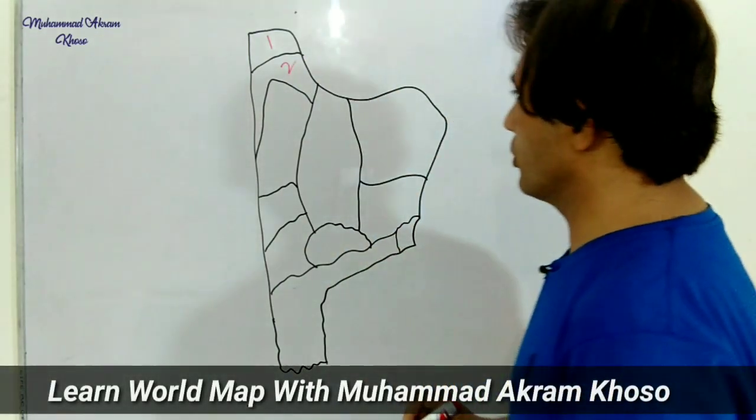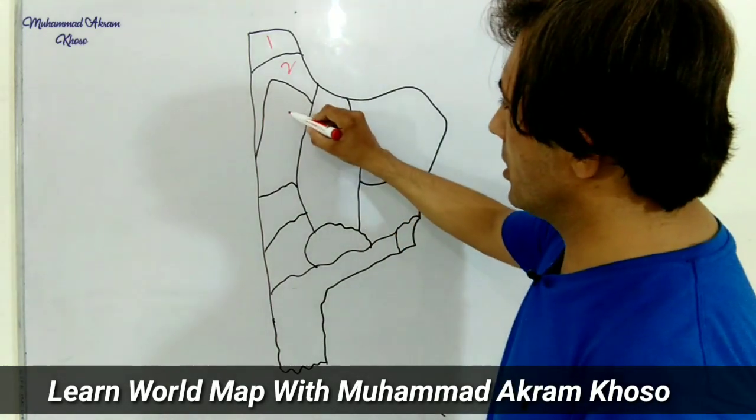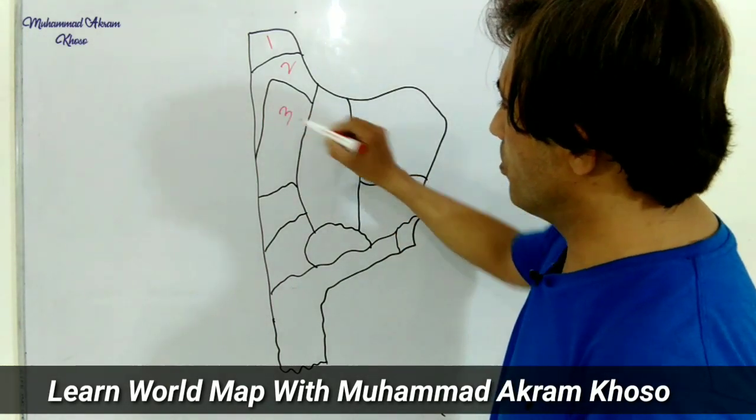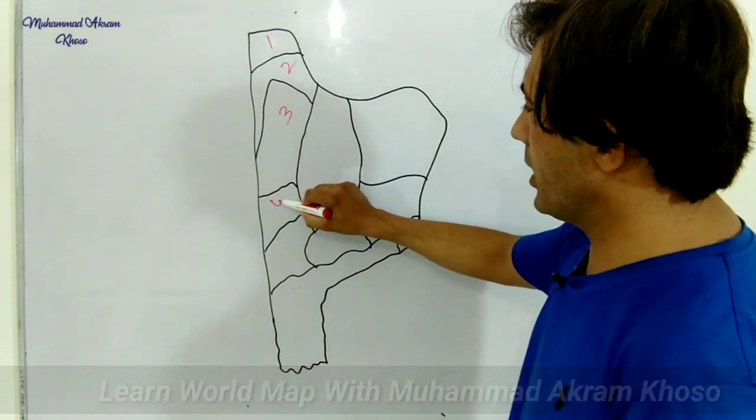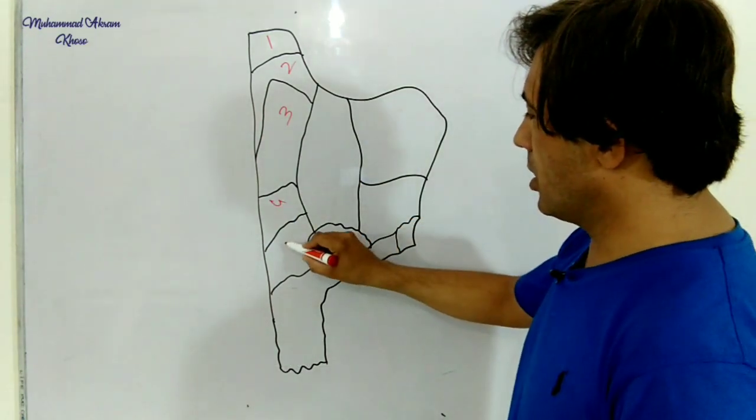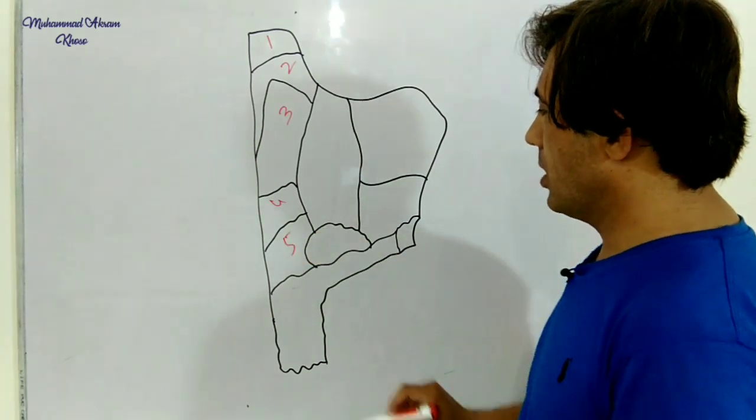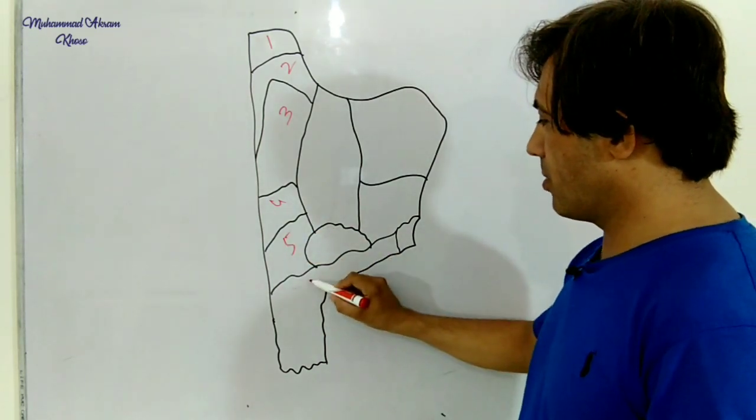Number three is Bosnia and Herzegovina. Number four is Montenegro. Number five is Albania. Number six is Greece.